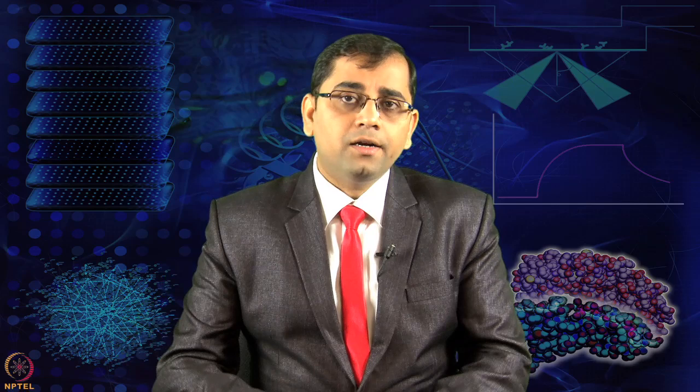The entire field of omics started from the very ambitious and comprehensive human genome project, along with many other genome projects, which laid the foundation of the whole field of omics. This 15-year disciplined effort produced the first draft genome map of humans and created a paradigm shift — we can now start looking at all the possible genes of a given system.